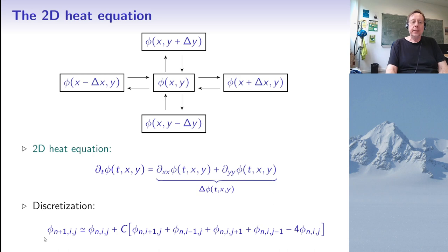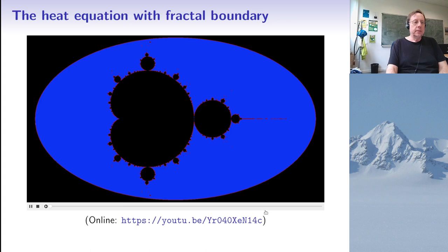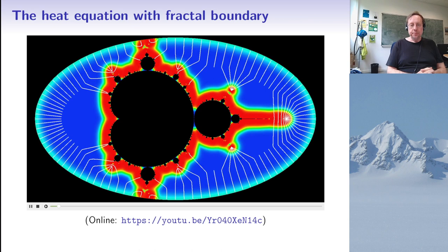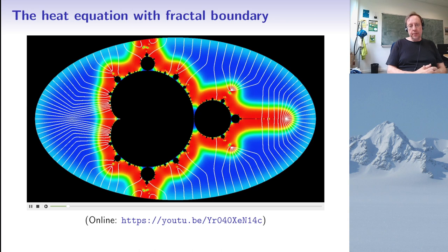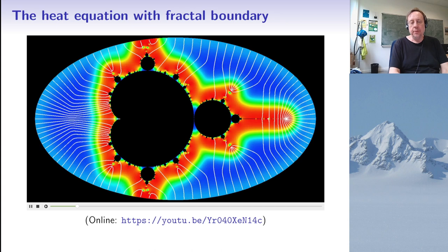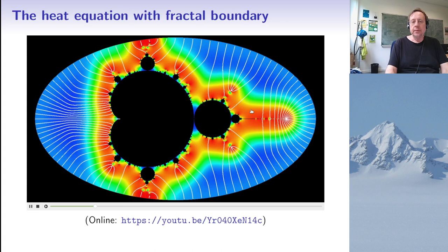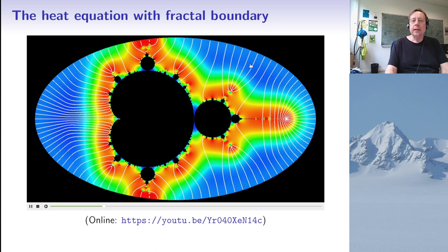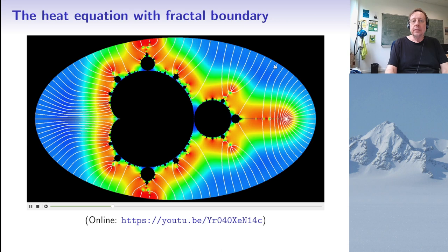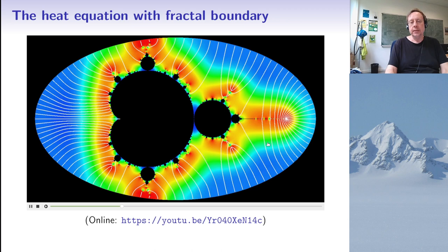The discretization scheme works in pretty much the same way in 2D. Taking delta x equal to delta y, we now have four neighbors appearing in the formula, and we subtract four times the value of phi in the middle. Here's a variant of the simulation: instead of showing temperature, I show the norm of the gradient of the temperature — the colors show how fast the temperature changes in space. Red areas are where temperature changes very quickly. The white curves are steepest descent curves, going along the slope of the gradient.